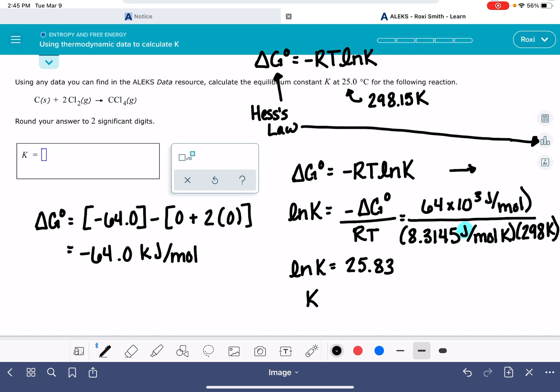And to solve for K, we're just going to use the inverse natural log. So E to the 25.83 is going to give us the value of K. And I am getting one point, this says two sig figs, so 1.7 times 10 to the, my calculator didn't give it to me in exponential notation. Counting the places: 1, 2, 3, 4, 5, 6, 7, 8, 9, 10, 11. So 1.7 times 10 to the 11.